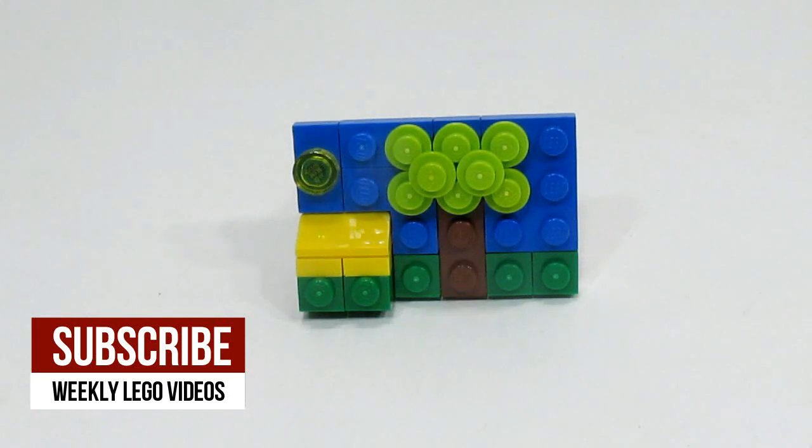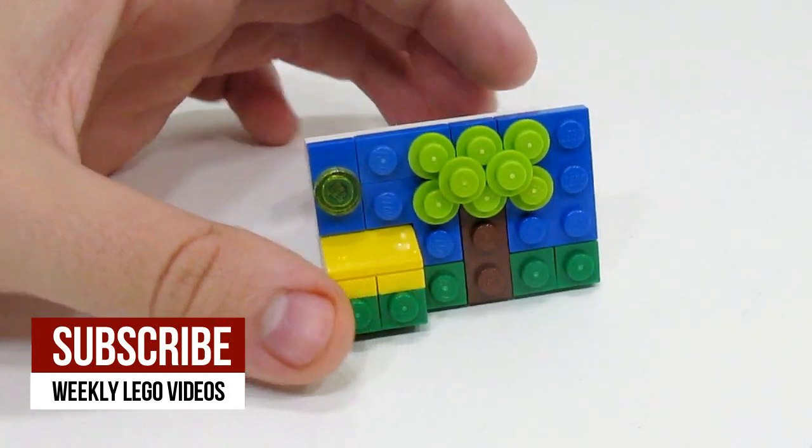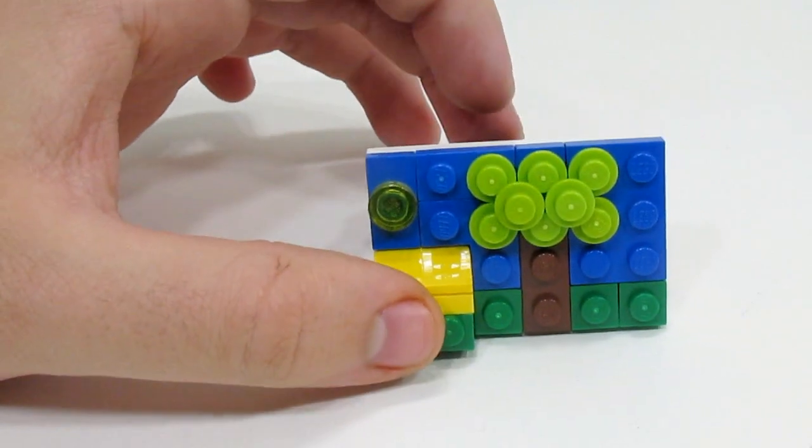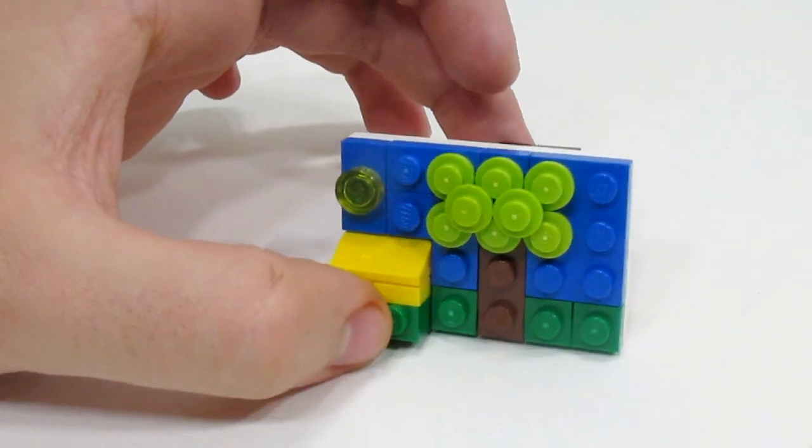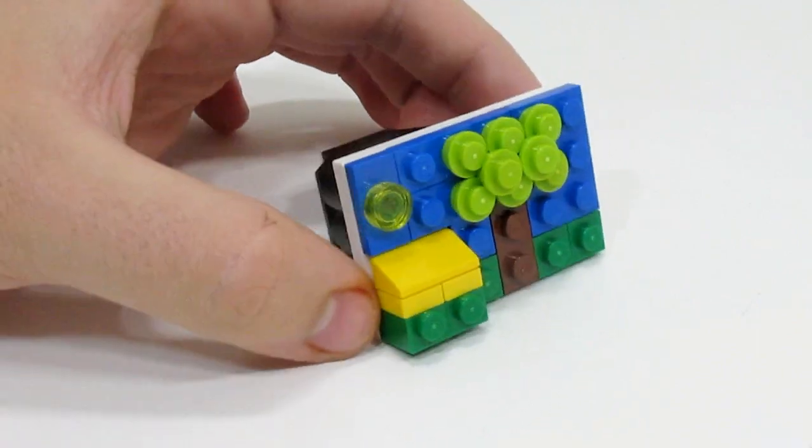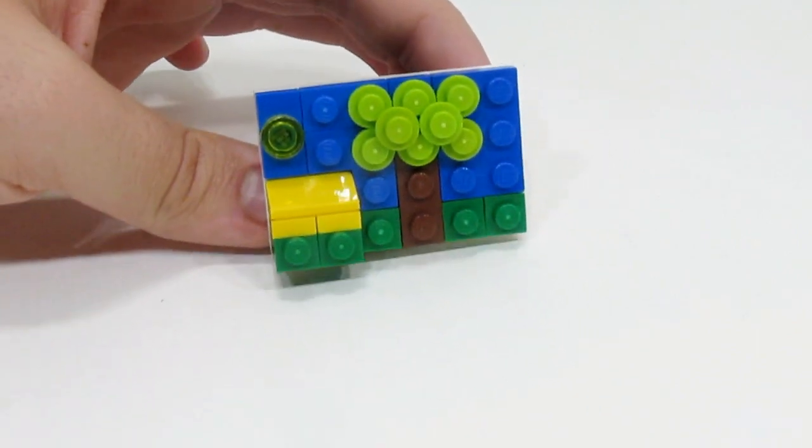So this is the LEGO neckerchief slide. Basically, the idea behind it is that this is something you would wear as part of your uniform if you're in the Boy Scouts. They're really chill with this—you can wear whatever. They have official ones, but there's also fun ones you can make. I made this LEGO one a couple years ago actually.